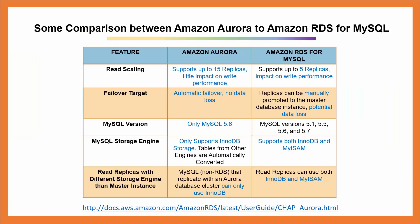I've highlighted some differences between Amazon Aurora and Amazon Relational Database Service for MySQL. For read scaling, Amazon Aurora supports up to 15 replicas with little impact on write performance, while Amazon RDS for MySQL supports up to five replicas and has an impact on write performance. For failover target, Amazon Aurora has automatic failover with no data loss, while replicas for Amazon RDS for MySQL can be manually promoted to the master database instance, but with potential data loss.